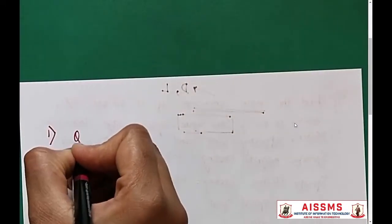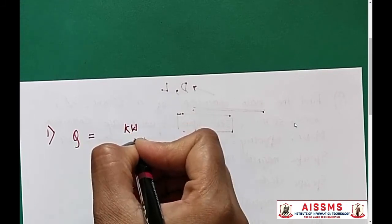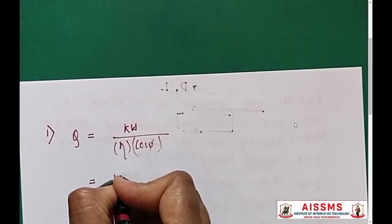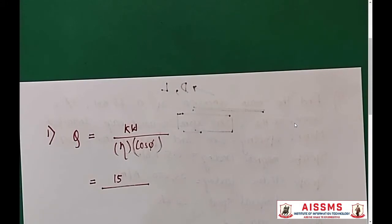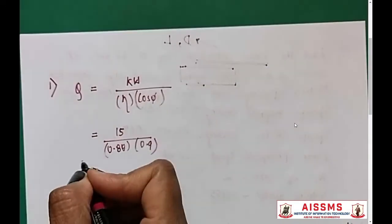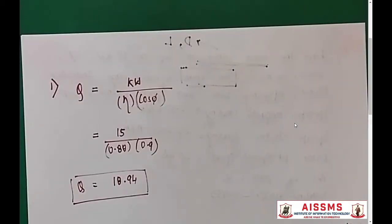The first step is we are supposed to find the value of Q, which is the rating of the motor given by the KW rating divided by efficiency times power factor. The rating is 15 kilowatt, efficiency is 0.88, and power factor is 0.9. We will calculate Q which comes out to be 18.94.